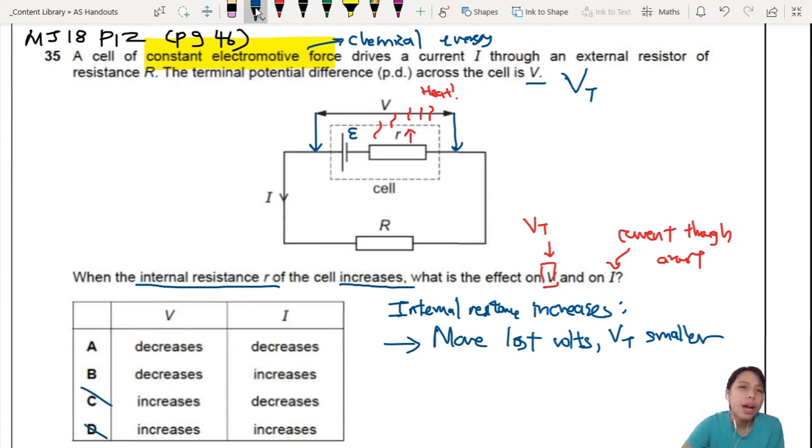If you're wondering, why does it decrease? Well, because remember, we looked at that equation just now. Your EMF is your terminal potential difference plus the lost volts. So, if you have more lost volts, your E is the same, so this thing has to decrease. Because you are losing more and more.